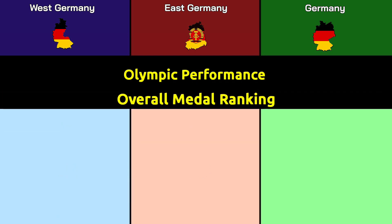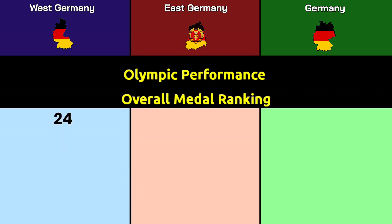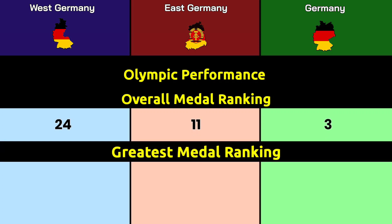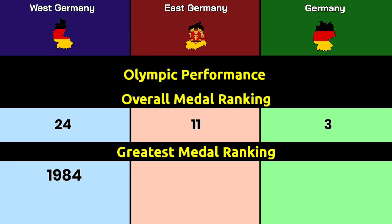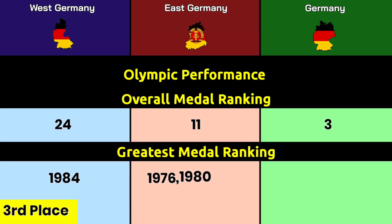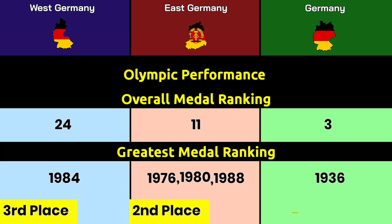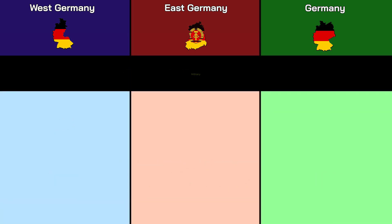Overall medal ranking: West Germany ranks 24th, East Germany ranks 11th, and Germany ranks 3rd. Greatest medal ranking: West Germany's best was in 1984 at 3rd place; East Germany's best was in 1976, 1980, and 1988 at 2nd place; and Germany's best was in 1936 at 1st place.